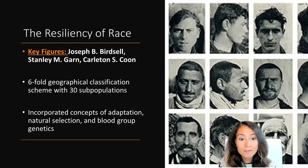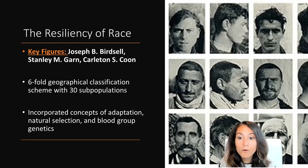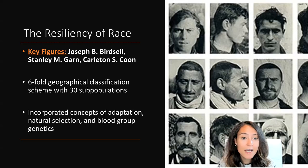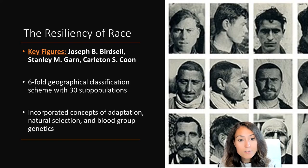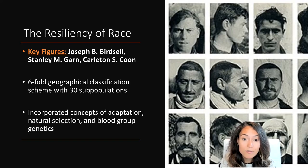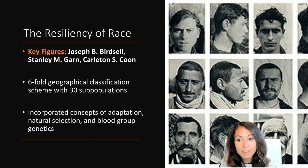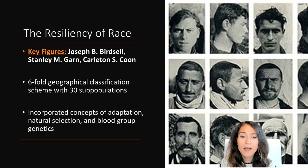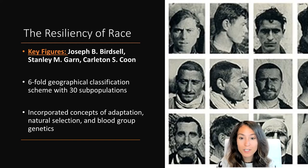For example, three of Ernest Hooton's students — Carlton Coon, Stanley Garn, and Joseph Birdsell — developed a six-fold geographical classification that divided the major racial groups across the world into 30 subpopulations and then identified micro and hybrid populations within these different groups. This group of scholars incorporated concepts of adaptation drawn from Darwin — environment and natural selection — in order to explain these variations across the 30 subpopulations. Their work was different from previous efforts because they applied evolutionary, genetic, and ecological principles to identify these racial or population variations.